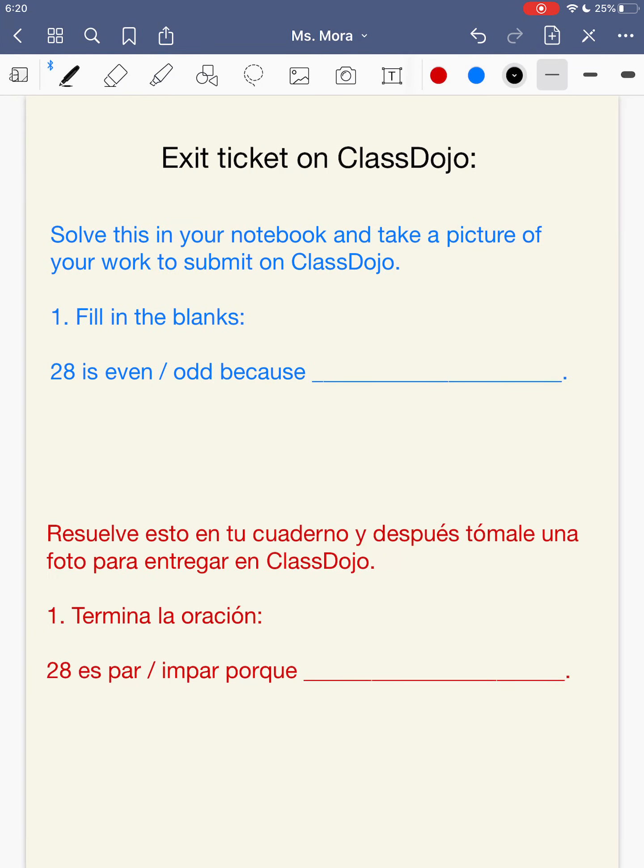So for your exit ticket, you're going to do this in your notebook and take a picture to submit on ClassDojo. So fill in the blanks. Your number is 28. You're going to write 28 is. And you only need to write even or odd. Because. And make sure you fill in this blank. You're going to tell me why you know 28 is even or why it's odd. Vas a resolver esto en tu cuaderno. Y le tomas una foto y lo entregas en ClassDojo. 28 es par o impar. Porque. Y aquí vas a escribir porque. Le tomas foto y lo entregas. En ClassDojo. I'm excited to see your work. See you tomorrow.